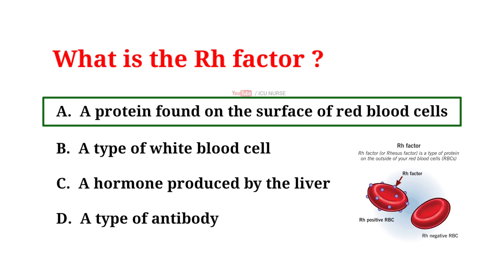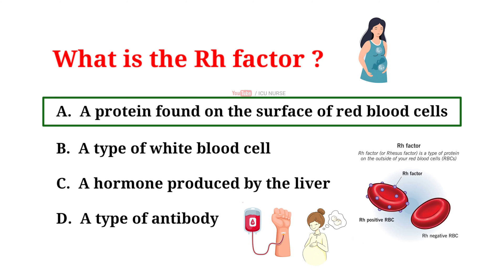The Rh factor is a protein that is present on the surface of the RBCs in some individuals but not in others. People who have the Rh factor are considered Rh positive, while those who do not are considered Rh negative. The Rh factor is an inherited trait and it is determined by the presence or absence of the Rh gene, which is located on chromosome 1. The Rh factor plays an important role in blood transfusions and pregnancy, as incompatibility of the Rh factor between the mother and the fetus can lead to Rh disease.